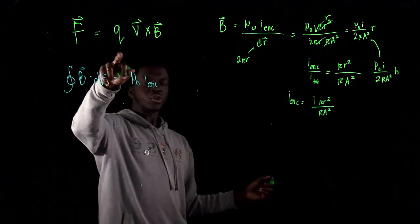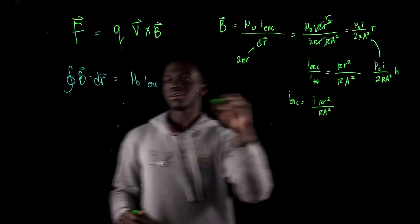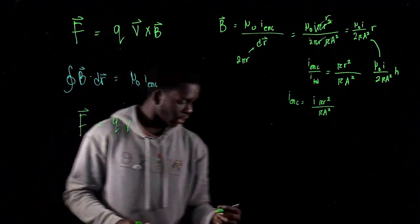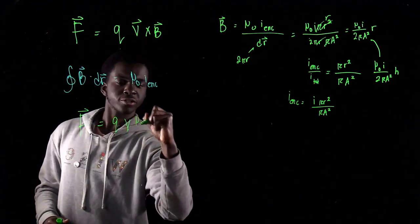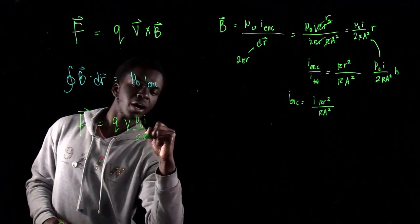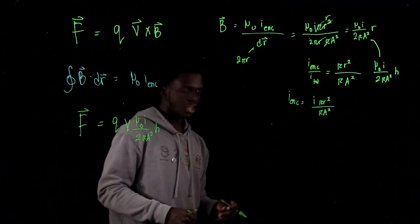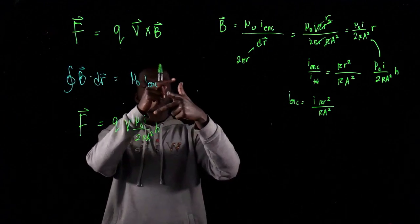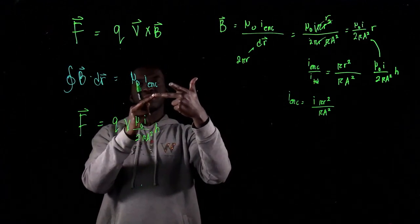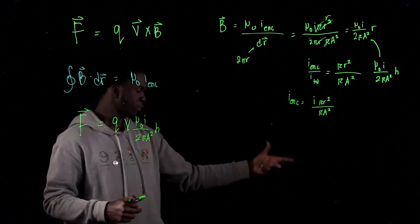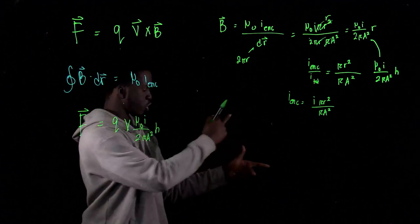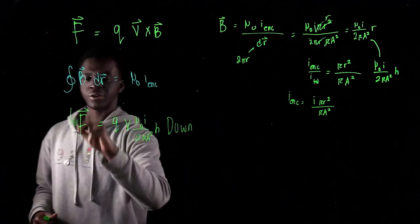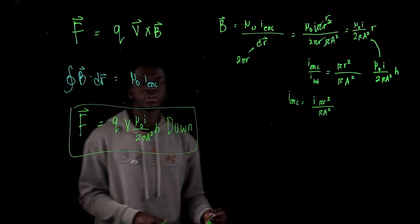The final magnetic force is F = qv · (μ₀ i / (2π a²)) · h. For the direction, using the right-hand rule with v along the axis and B circling the wire: the force points downward in this problem. That's the answer for number two.